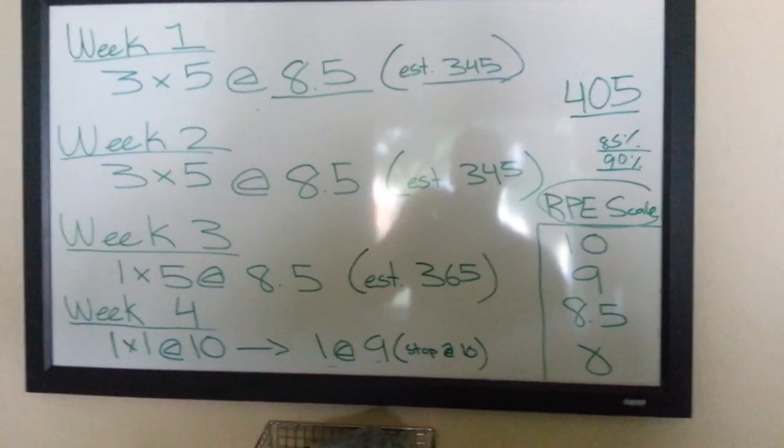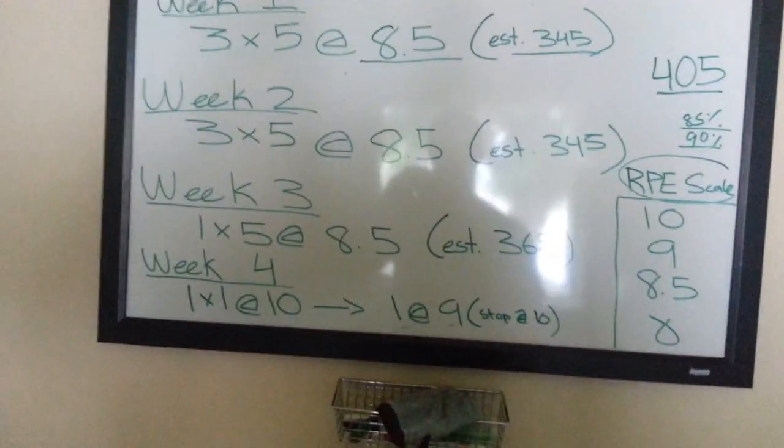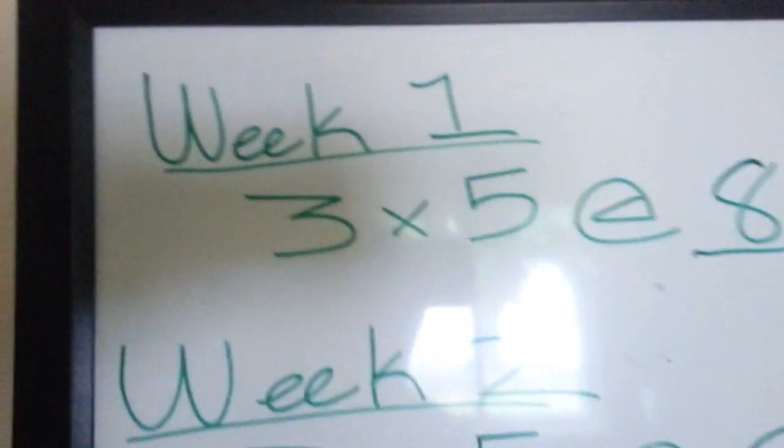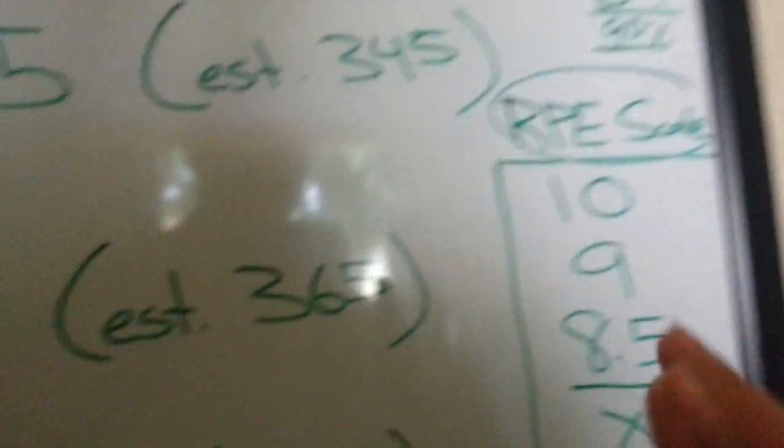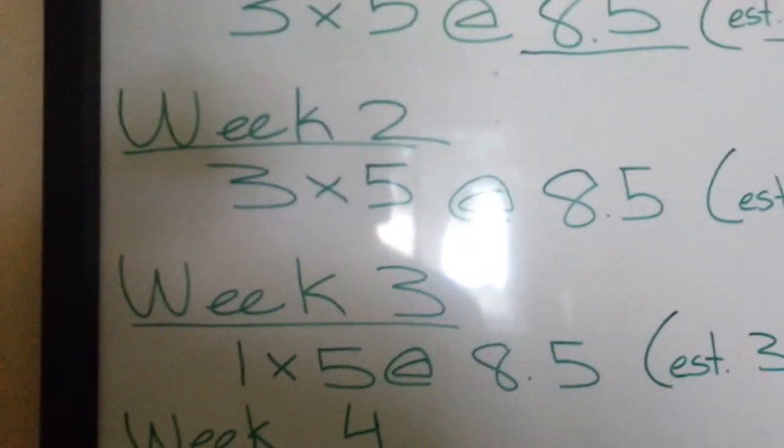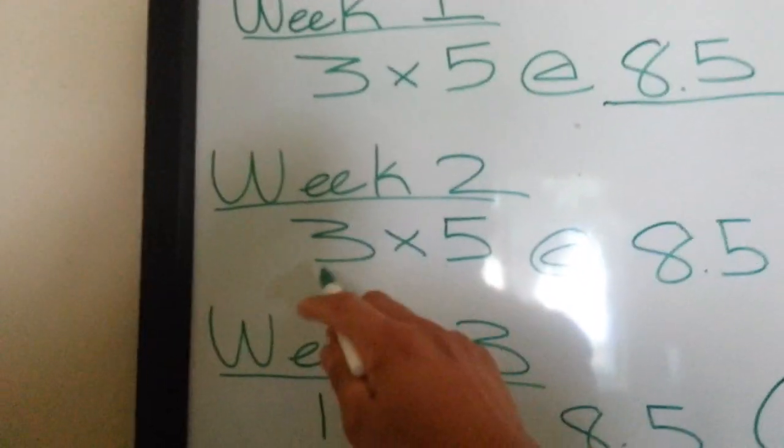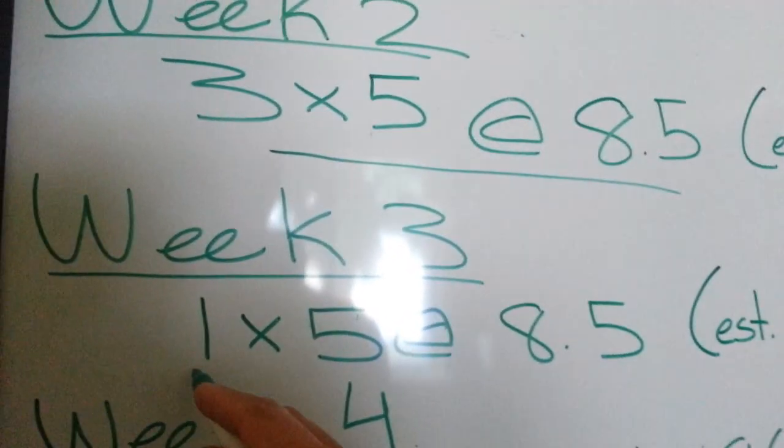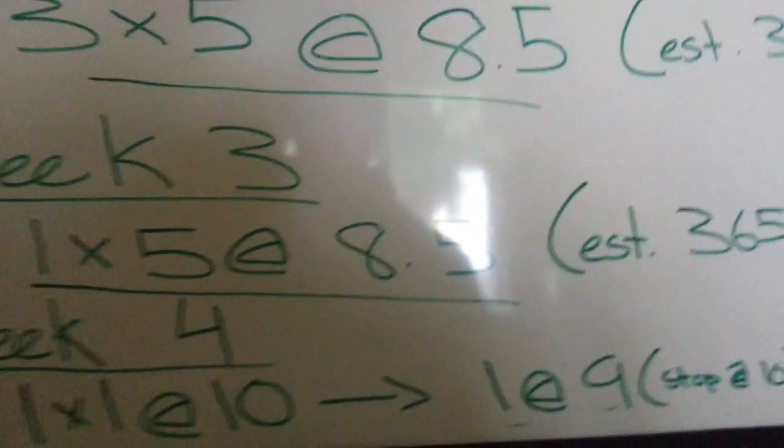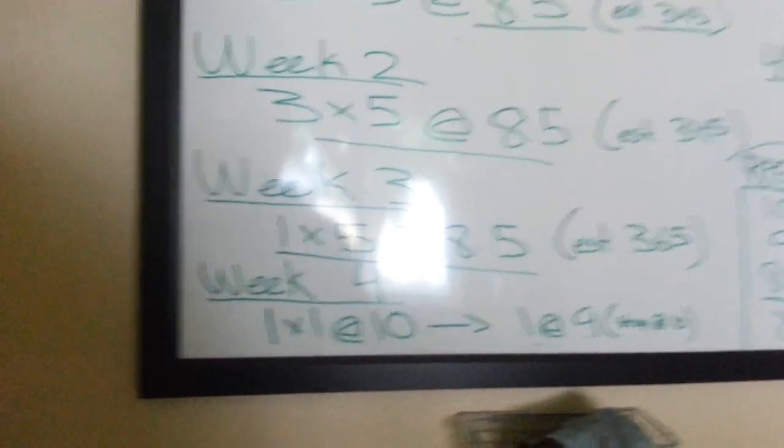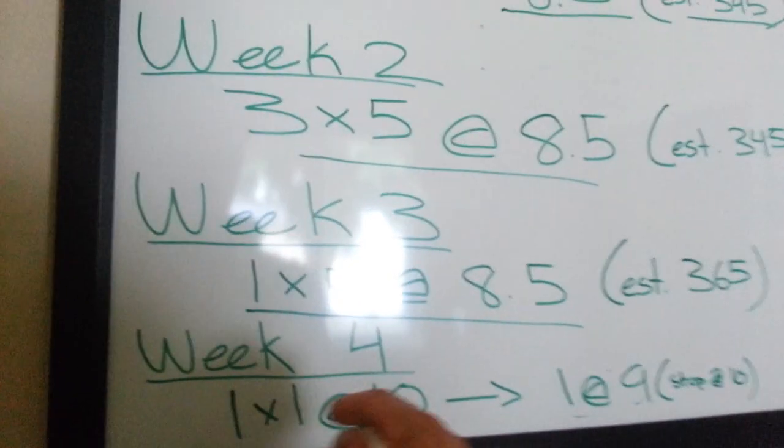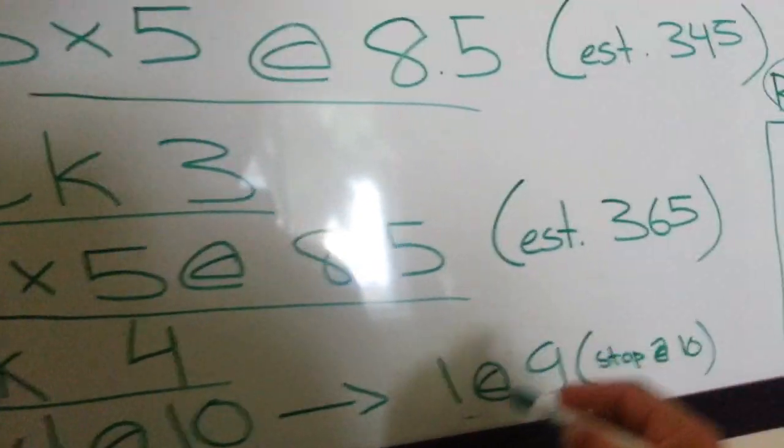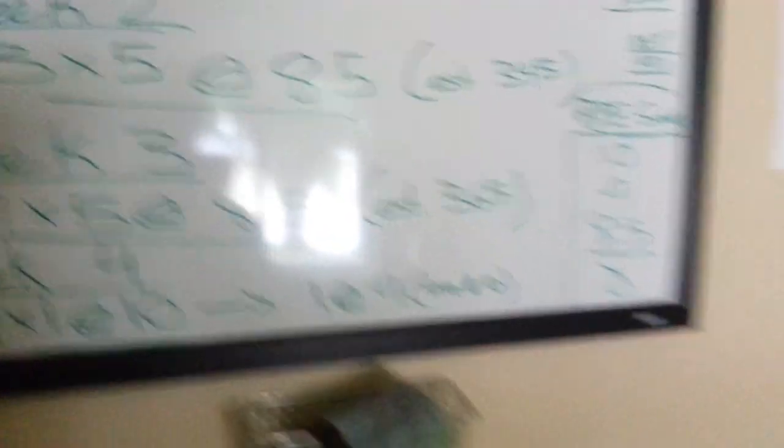And use the RPE scale to our advantage. So Brian Jewell, week one, I think it's a three by five at eight point five. So an RPE of eight point five means two reps left in the tank. He could have done two more reps, but obviously we're not doing those two extra reps. We're leaving it there. And he does that for two weeks, three by five at eight point five. And then week three, one by five at eight point five. And then week four, one by one at ten. And then I'll tell you guys what that is afterwards.